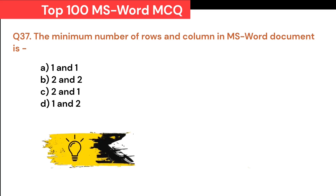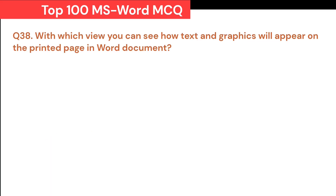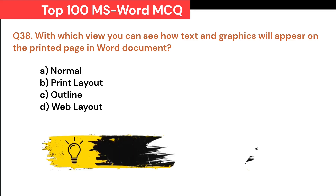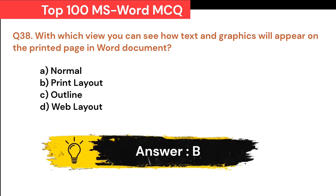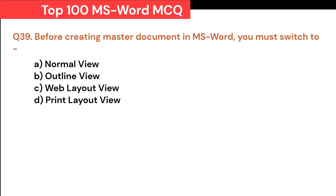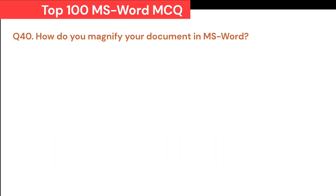A. 1 and 1. B. 2 and 2. C. 2 and 1. D. 1 and 2. Correct answer is A. 1 and 1. With which view can you see how text and graphics will appear on the printed page in a Word document? A. Normal. B. Print Layout. C. Outline. D. Web Layout. Correct answer is B. Print Layout. Before creating a master document in MS Word, you must switch to: A. Normal view. B. Outline view. C. Web Layout view. D. Print Layout view. Correct answer is B. Outline view.